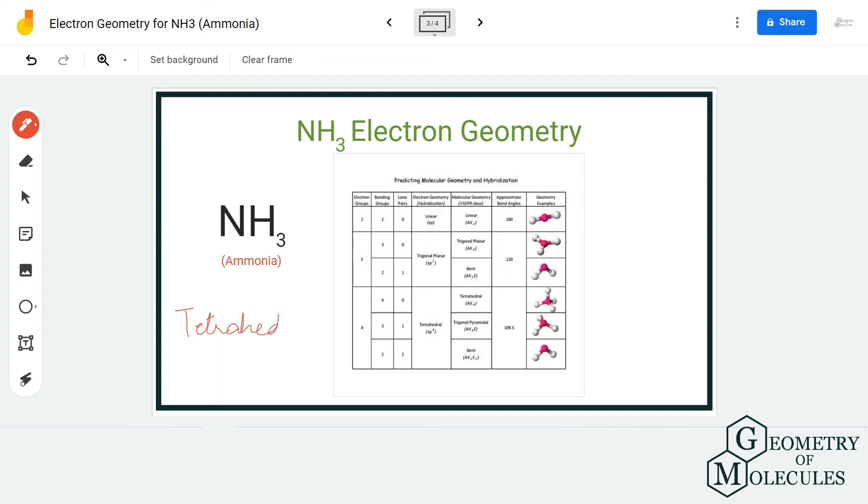In electron geometry, we consider the electron regions and electrons, and we just do not look at the shape. We consider all these things when we are looking at electron geometry. So molecular geometry and electron geometry are two different things, and if you have been confused about it...